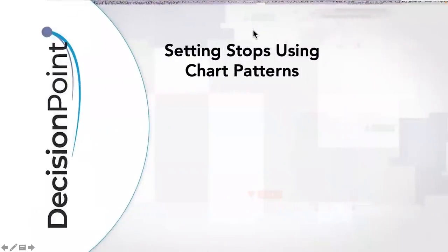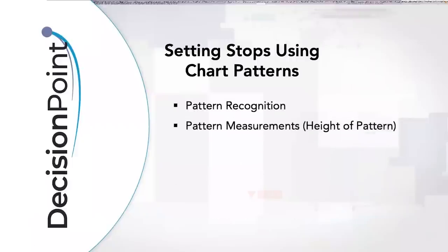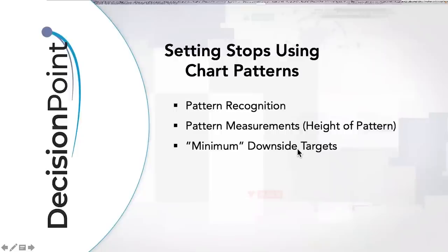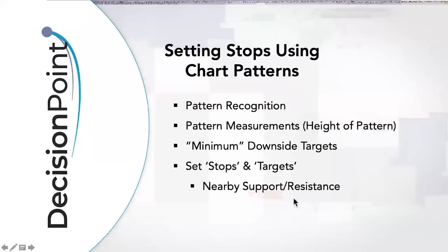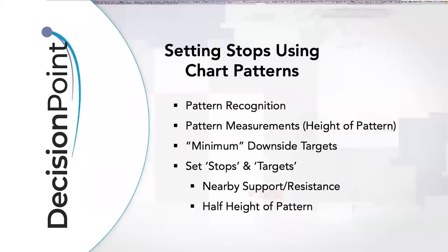So how can we set stops using these chart patterns? Once you recognize a pattern, you look at those minimum upside and downside targets — they're almost always dependent on the height of the actual pattern. Those minimum downside targets offer a pretty good stop level. You can also set targets based on minimum upside targets from bullish patterns, look at nearby support and resistance, or take half the height of the pattern. If you're at all-time highs, about half the pattern height moving up is a reasonable target.